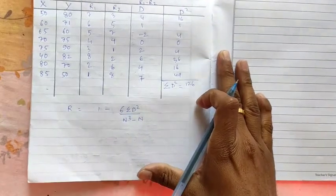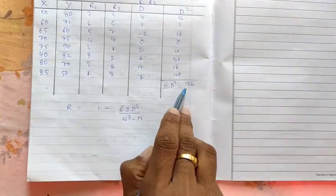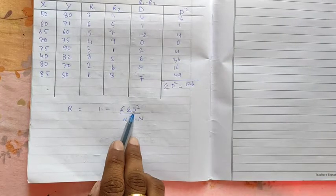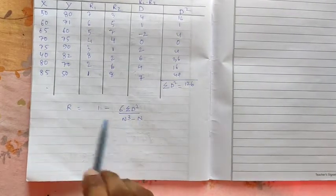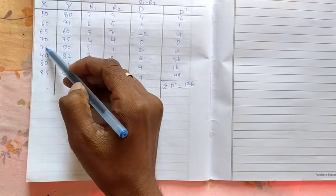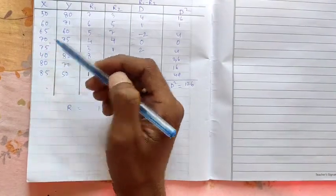Now we got summation d square. So what is the formula? 1 minus 6 summation d square divided by n cube minus n. So what is n here? 1, 2, 3, 4, 5, 6, 7, 8. 8 numbers are there. So n is 8.